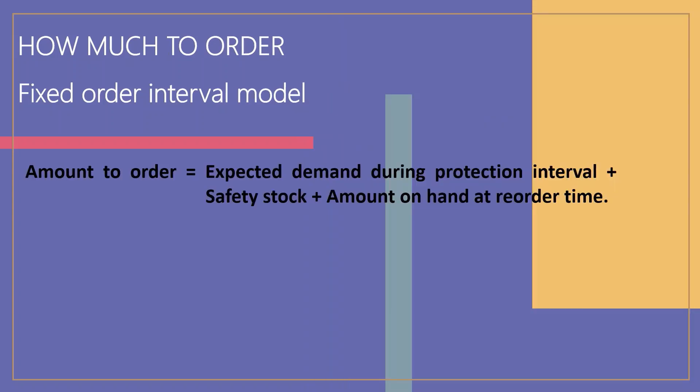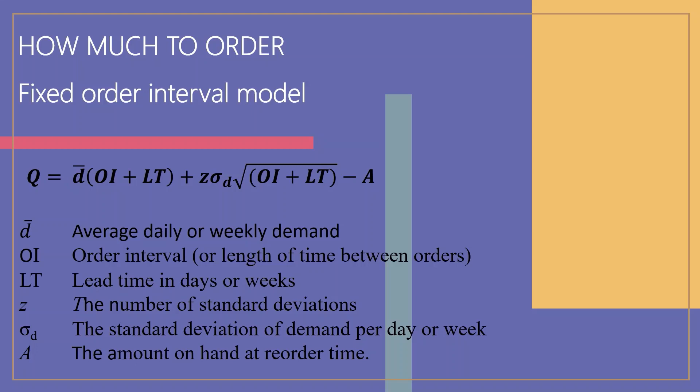Order size in the fixed interval model is determined by the following computation: amount to order equals expected demand during protection interval plus safety stock minus amount on hand at reorder time. This can be mathematically represented as: Q = D̄ × (OI + LT) + Z × σD × √(OI + LT) − A. Where D̄ is the average daily or weekly demand, OI is the order interval or length of time between orders, LT is the lead time in days or weeks, Z is the number of standard deviations, σD is the standard deviation of demand per day or week, and A is the amount on hand at reorder time.